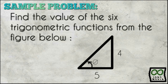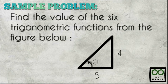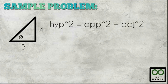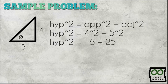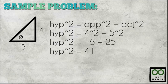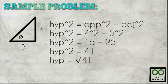Here is another sample problem: find the value of the six trigonometric functions from the figure below. The figure shown will only give you the value of the opposite side, which is equal to 4, and the adjacent side, which is equal to 5. To get the hypotenuse, let us use the Pythagorean theorem: hypotenuse squared equals opposite squared plus adjacent squared. Substituting the values gives hypotenuse squared equals 4 squared plus 5 squared, which equals 16 plus 25, and the sum of 16 and 25 is 41. Taking the square root of both sides gives hypotenuse equals square root of 41.